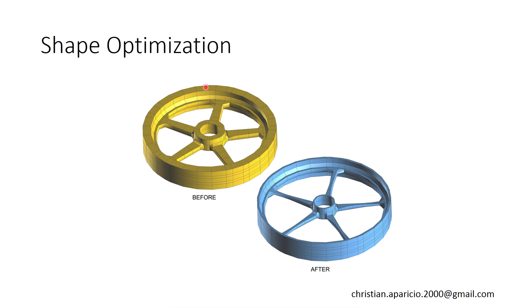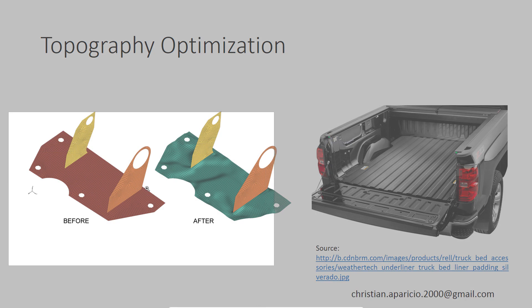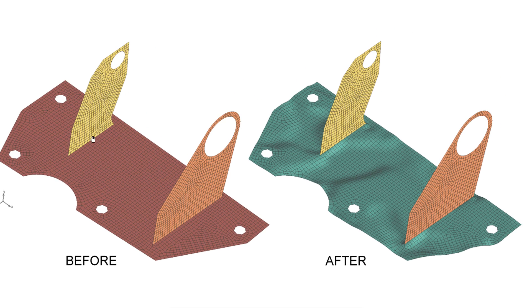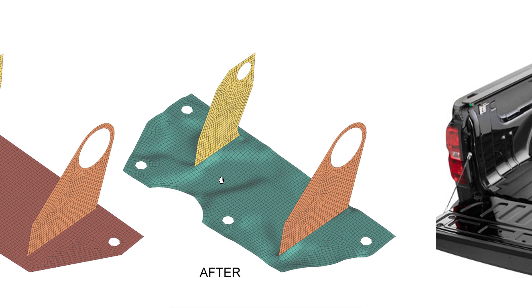Topography optimization. I wish I had a better example, but I think this demonstrates the point. Here in red is the original design — you'll notice that it's completely flat. The green piece has troughs and raises to it. What topography optimization allows you to do is let the nodes move transverse to the original plane, and you can see that very subtly with this green example.